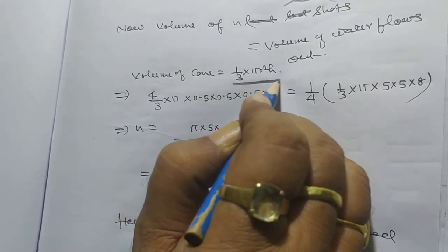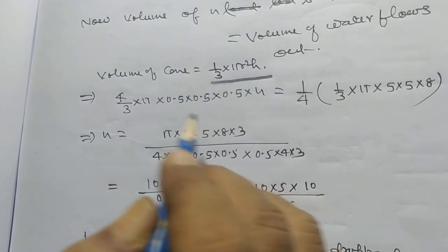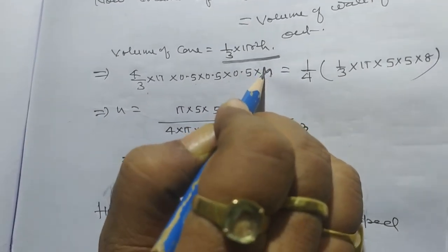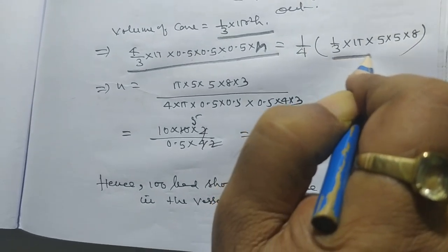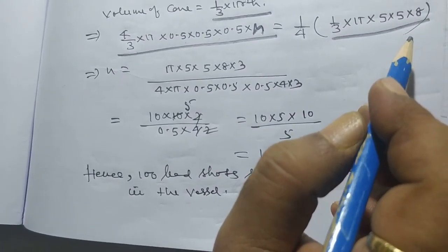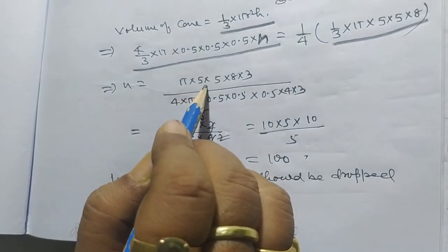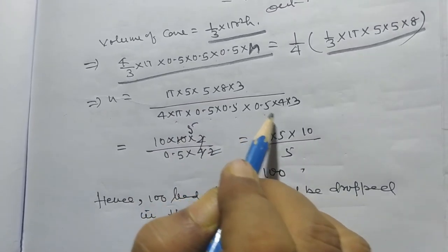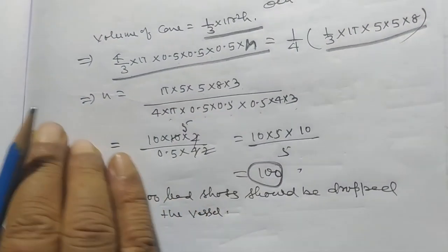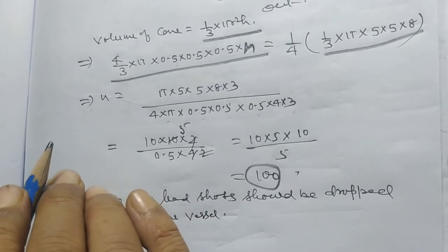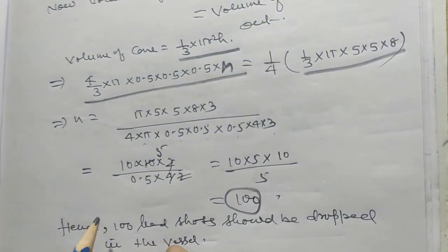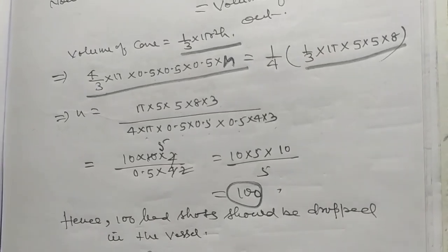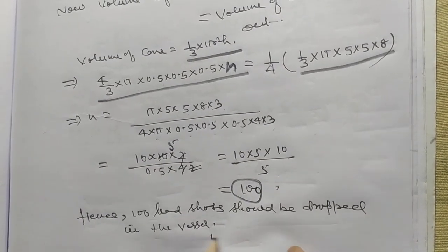Volume of cone is one by three pi r square h. So four by three pi times zero point five cubed into n equals one by four of the volume of the cone. Therefore n equals pi times five into five into eight into three, divided by four into pi times zero point five cubed into four into three. After solving, it will be one hundred. Hence one hundred lead shots should be dropped in the vessel.